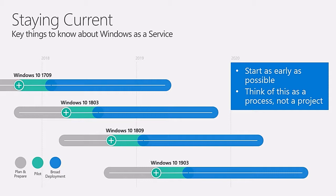When we look at this from a process perspective, this really isn't the same as what you've done in the past where you did a deployment project every three to five years. This is much more continual. You will always be working on planning and preparing for the next release that's coming out. We're already preparing for the next release coming out next year. We're doing insider preview builds, showing new features, providing new functionality. You're probably then going to be piloting a release that just came out, like Windows 10 1709. That's been out now for a couple of weeks. Hopefully you're already looking at it and getting ready to deploy that in your organization.